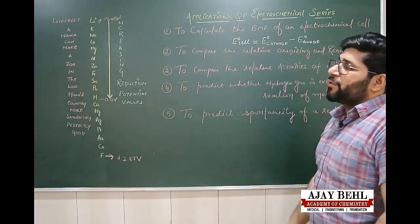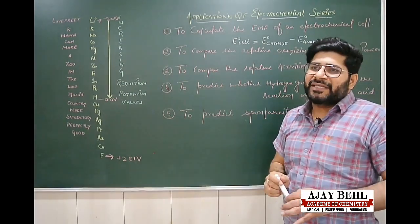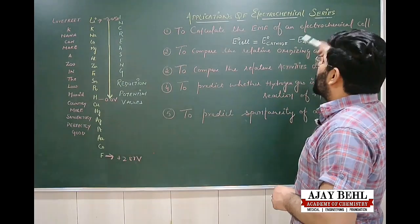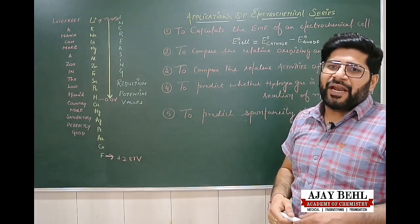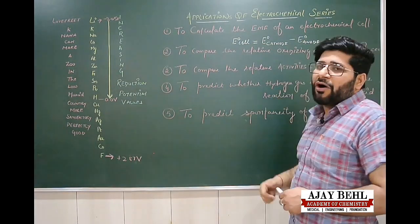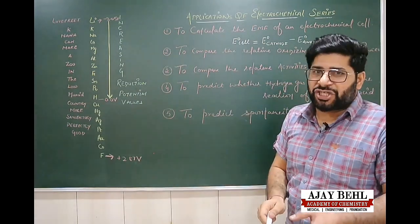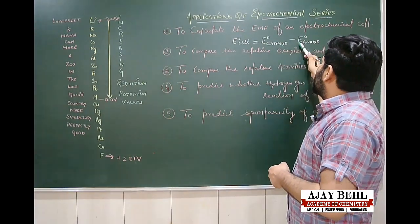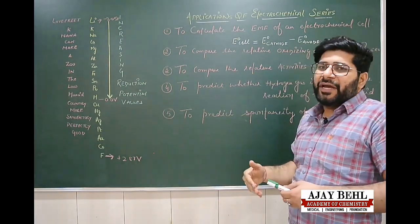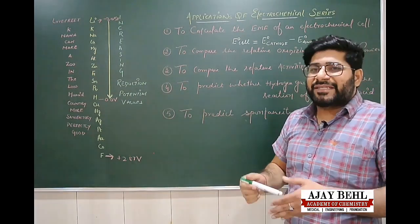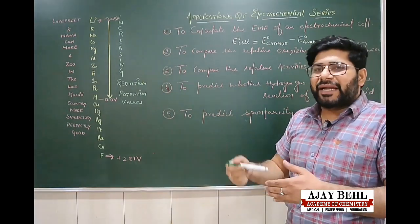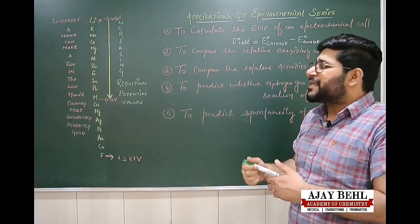The first application is that we can easily calculate the EMF of an electrochemical cell using the relation: E⁰(cell) = E⁰(cathode) − E⁰(anode), which is the standard electrode potential of cathode minus that of anode. You can also express this as E⁰(right) − E⁰(left), or E⁰(reduction) − E⁰(oxidation), since reduction takes place at the right-hand side cathode and oxidation at the left-hand side anode.